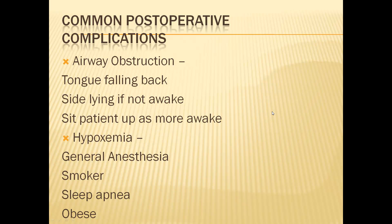Common post-operative complications: the number one is airway obstruction. The number one cause is that if a patient is lying supine, the tongue falls back and sits right in the throat, causing obstruction of air. If a patient is not awake, they should be lying in a sidelying position. As they start to wake up, put them on their backs supine and begin raising the head of the bed — going from sidelying to low Fowler's and then high Fowler's.